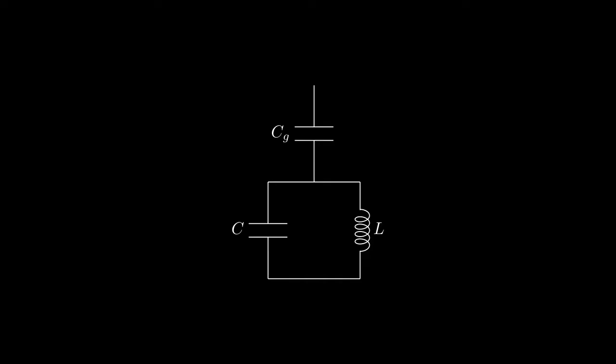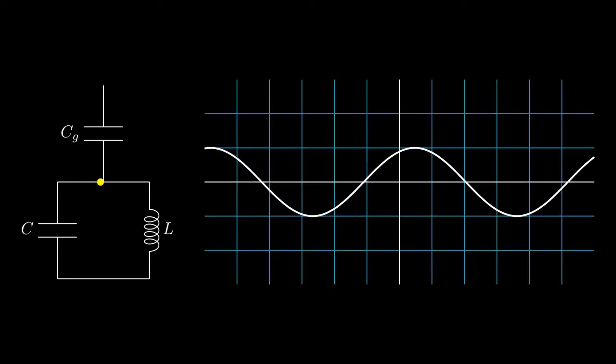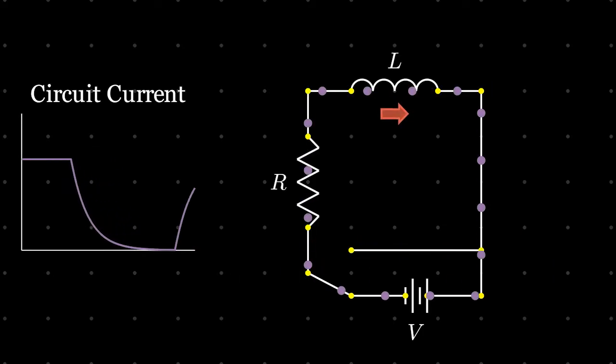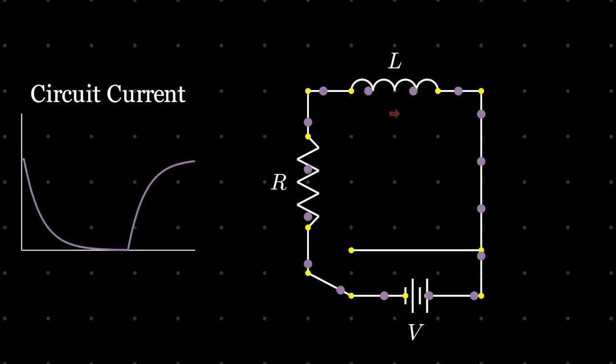The LC circuit is a simple harmonic oscillator, just like the mass on the spring. Except here, instead of a mass oscillating, we have charges oscillating. In this circuit diagram, L is an inductor, a circuit element that resists changes to current flow by producing magnetic fields.